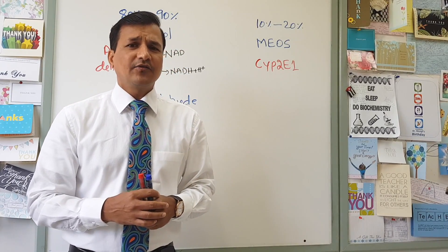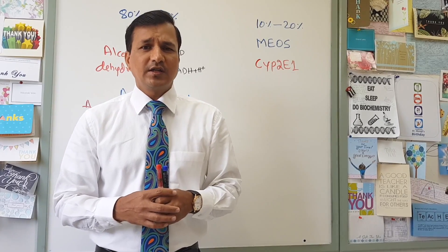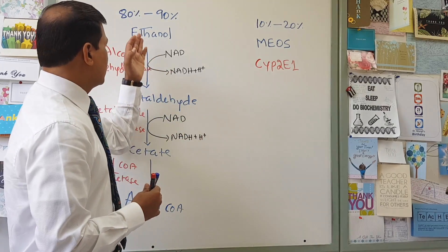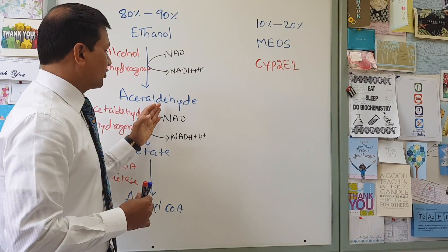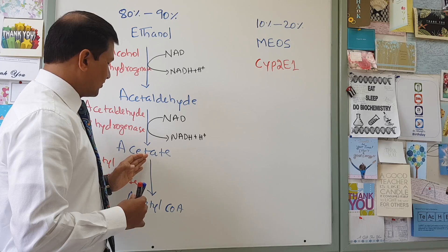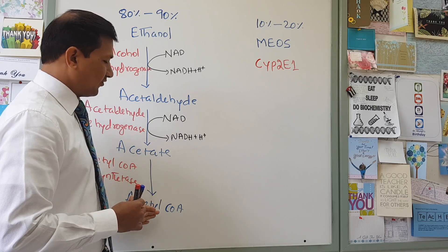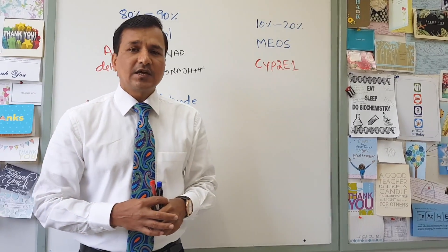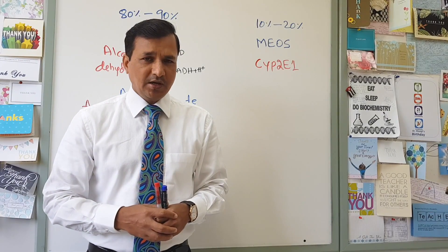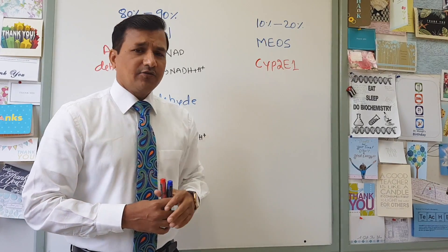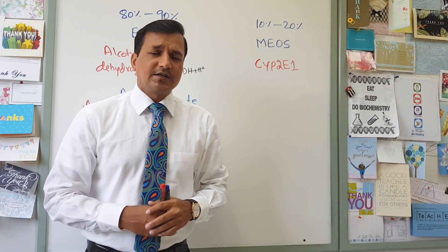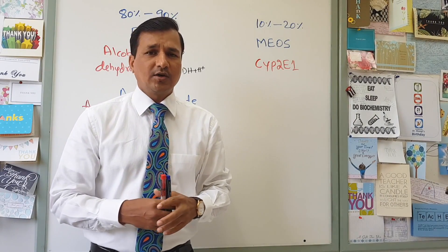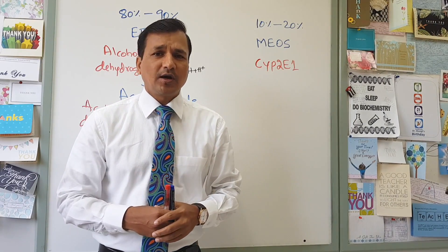Around 85 to 95% of alcohol in the liver is metabolized by enzyme-mediated action. Ethanol is converted to acetaldehyde, acetaldehyde is converted to acetate, and acetate is further converted into acetyl-CoA. All this conversion is enzyme-mediated. Around 10 to 20% of alcohol is metabolized by cytochrome P450 enzymes present in microsomes, that is in the smooth endoplasmic reticulum.